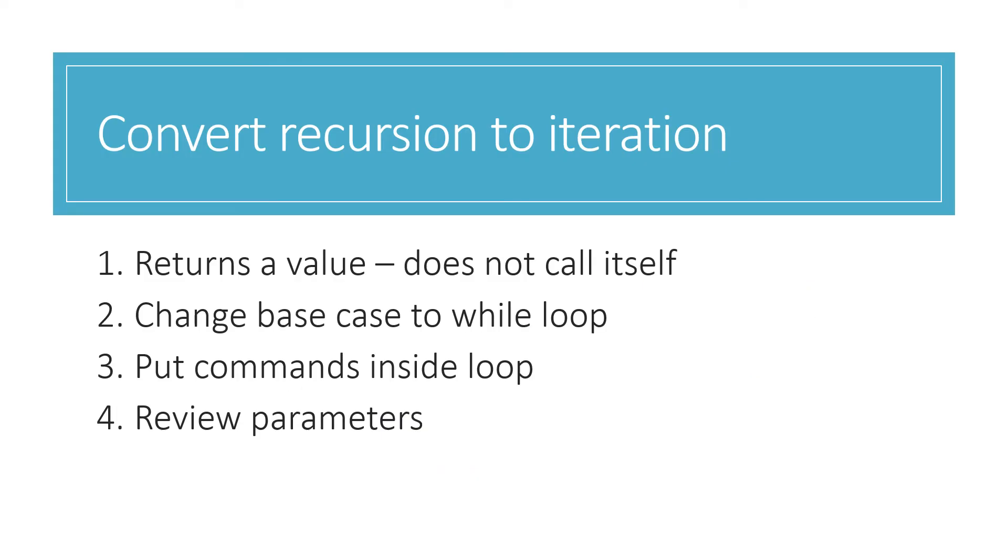So hopefully you've written that function because we're going to go through this checklist now to convert that recursive function into an iterative function. The checklist, we've got to do four things. We've got to make sure that the function does not call itself. That will stop it being a recursive function. We've got to look for the base case and turn that into the exit condition of a while loop. We've got to put all the remaining commands inside that loop and we've just checked the use of parameters because iterative functions don't always need parameters. So it's worth taking a look at that. That's our checklist. We're going to go through those four steps.